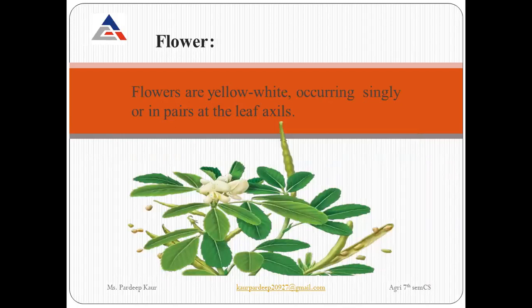Next is how its flowers look. The flowers of fenugreek are yellow to white in color, and they appear in pairs at the leaf axils. When the maturity time comes closer, the plant produces yellow-white colored flowers appearing in pairs at the leaf axils.